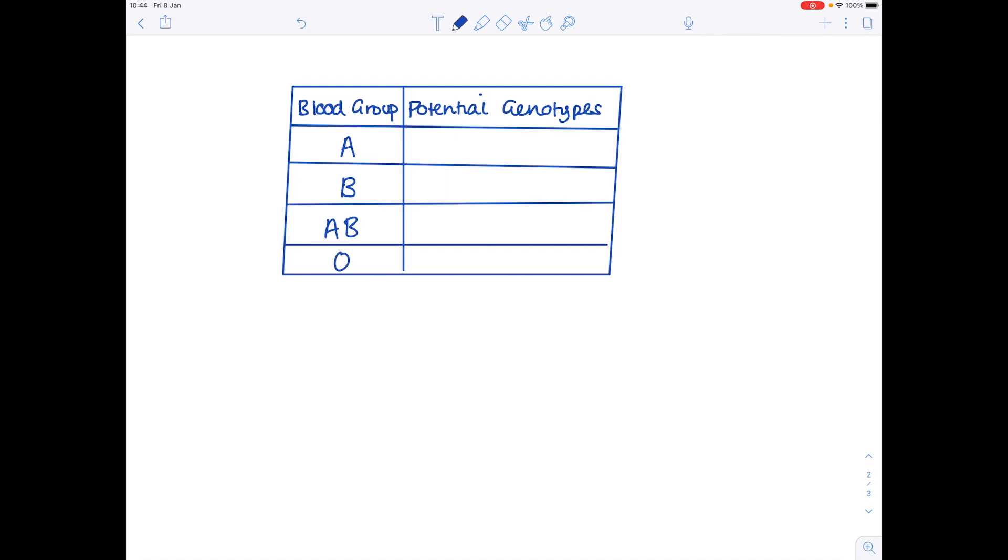So what's the potential genotype for blood group A? Well clearly you could have that homozygous version or because that O allele is recessive effectively if you have only one copy of that A you'll still have that A blood group. The same is true for blood group B.